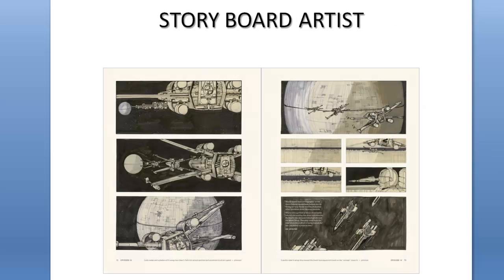There is a lot of detail in certain areas, but other areas are left open-ended. Even the gigantic planet here — which is actually the Death Star — doesn't have every single detail on it. It's there just to give you the idea and feeling of the composition of that planet. You don't have to have every detail; the idea is clarity.